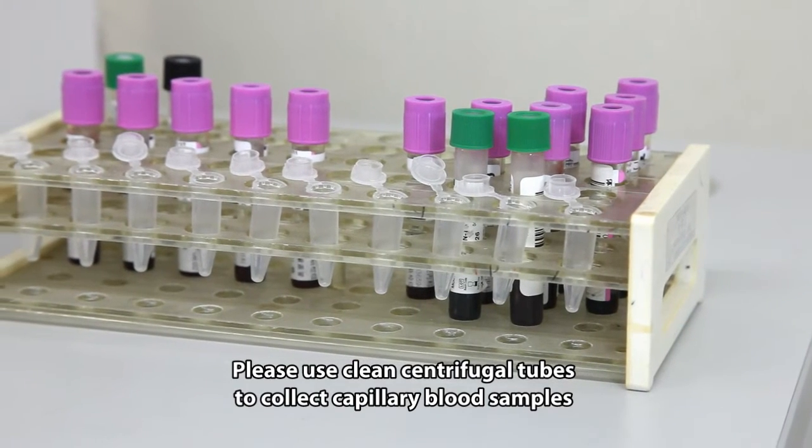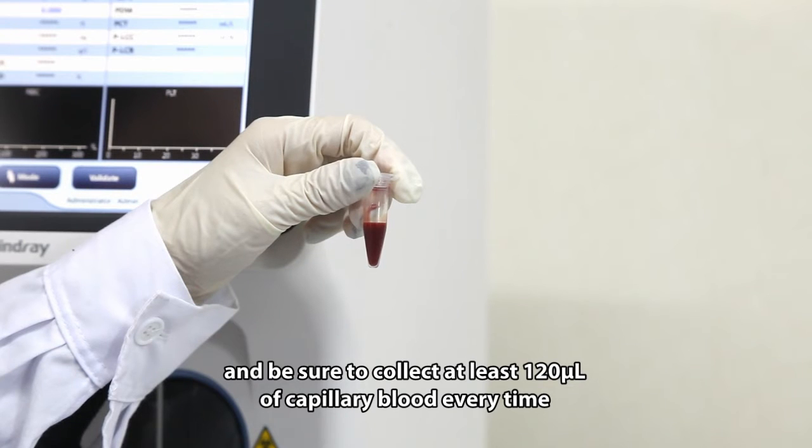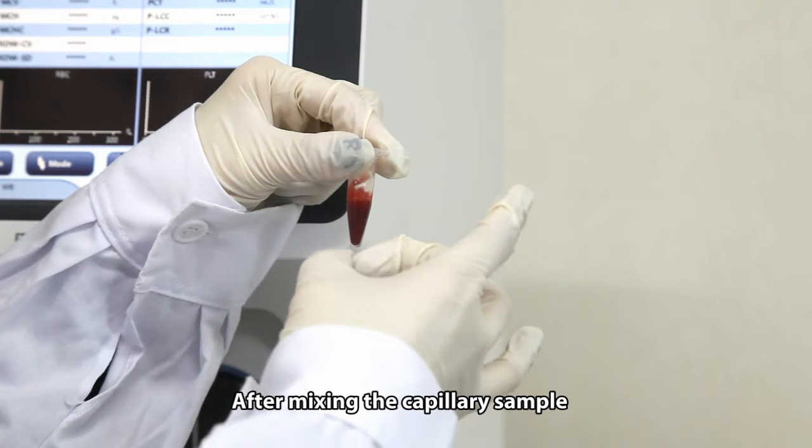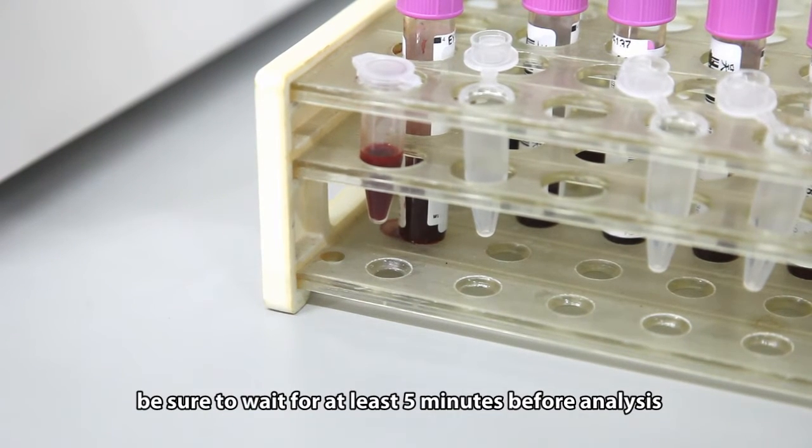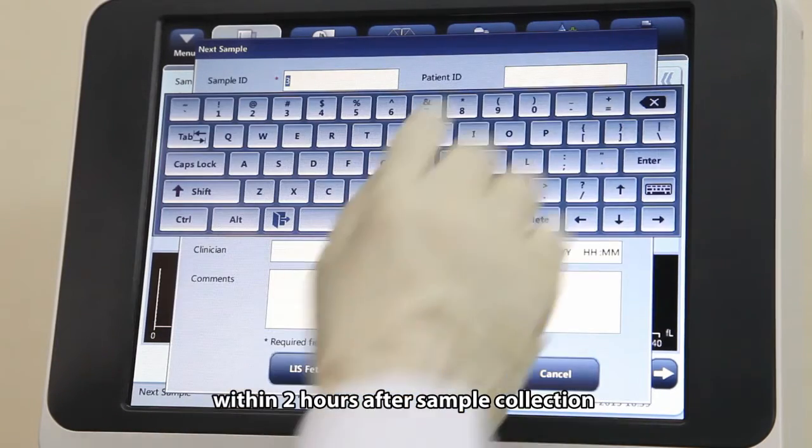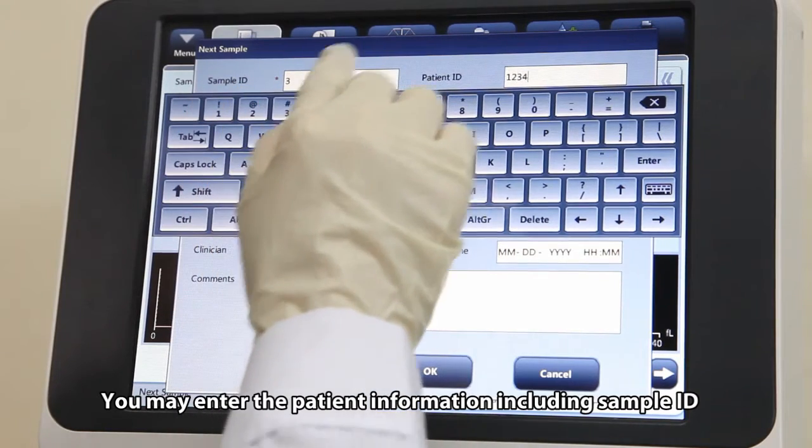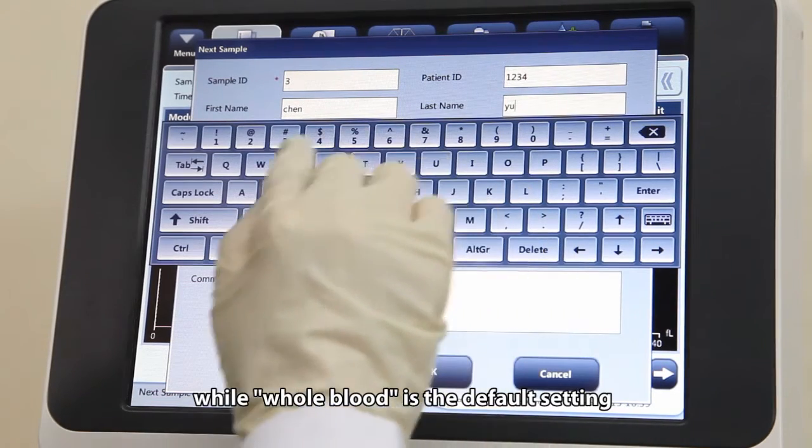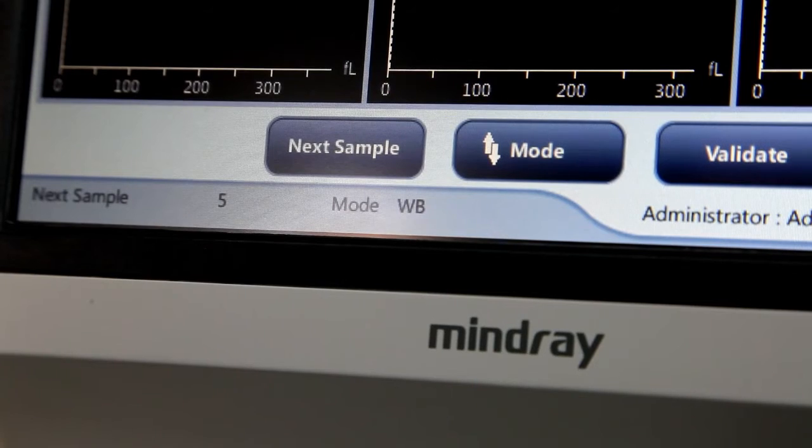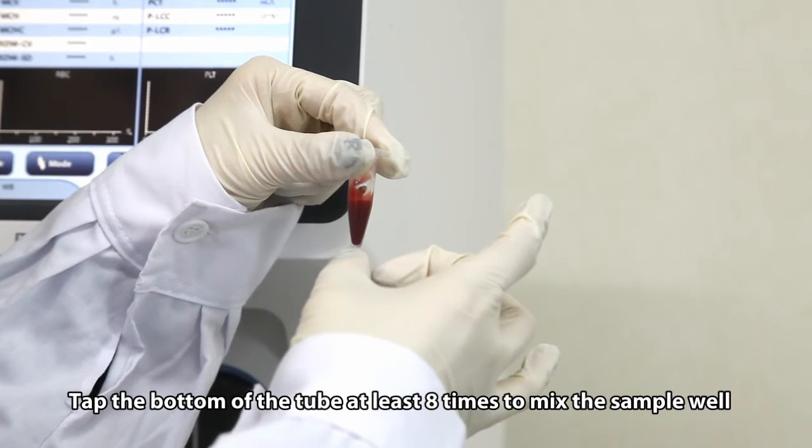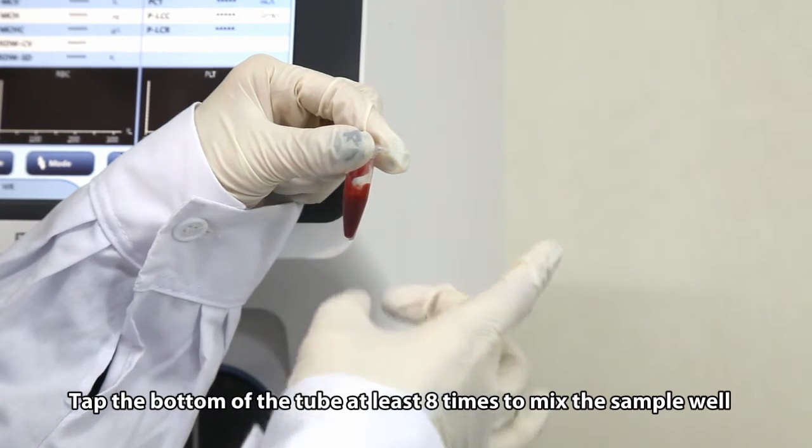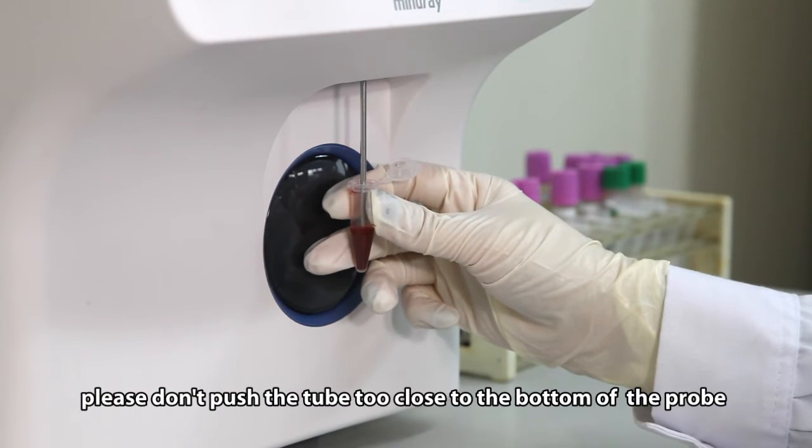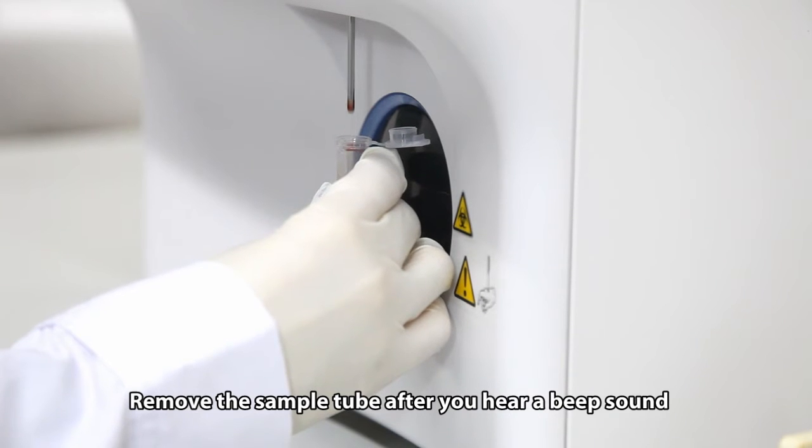Please use clean centrifugal tubes to collect capillary blood samples and collect at least 120 microliters of capillary blood every time. After mixing the capillary sample, be sure to wait at least 5 minutes before analysis and complete the analysis within 2 hours after sample collection. You may enter patient information including sample ID, name, age, gender, while whole blood is the default setting. Tap the bottom of the tube at least 8 times to mix the sample well and run it through the sample probe. To prevent blood blockage, don't push the tube too close to the bottom. Remove the sample tube after you hear a beep sound.